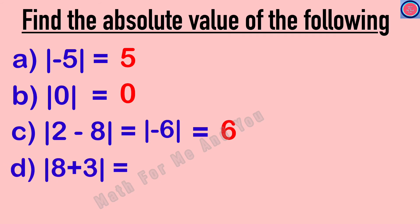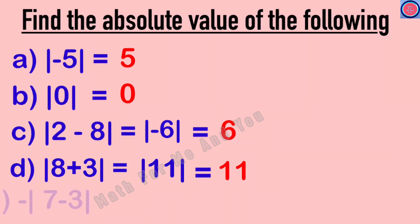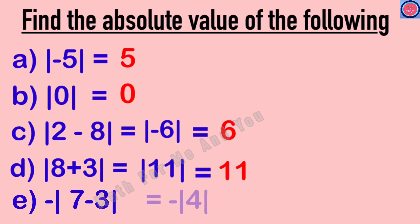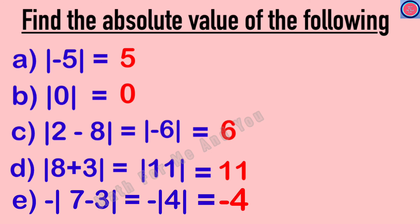Absolute value of 8 plus 3: first, 8 plus 3 equals 11, and absolute value of 11 is equal to 11. Next: negative modulus of 7 minus 3. First, inside the modulus: 7 minus 3 equals 4, so this becomes negative modulus of 4. Modulus of 4 is 4, so the final answer is negative 4. Hope you are clear with the basic idea of absolute value or modulus.